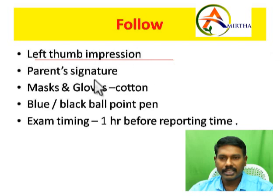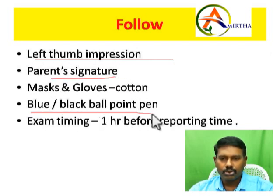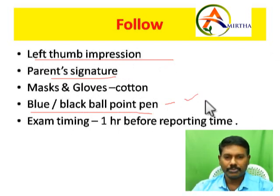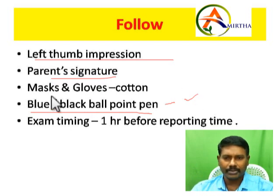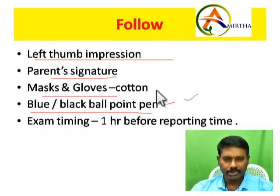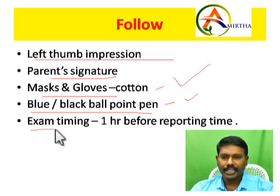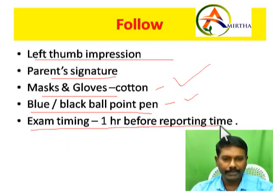So what are all the things you need? Left thumb impression, parent signature, and a blue or black ballpoint pen to mark. Also, mask and gloves — you have to take cotton ones.